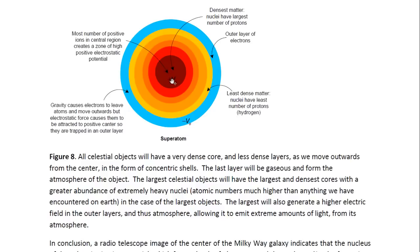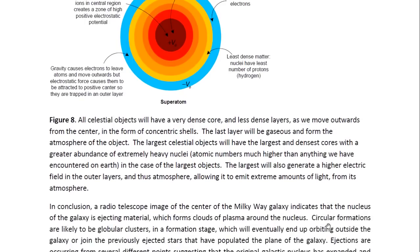It thus produces an electric potential difference which generates a high electric field in the outer layers and thus in the atmosphere. The outer layers would be less and less dense as we move outwards, and the least dense layer would be the atmosphere, which is gaseous. There would be a very high electric field in the outer region, and thus this would result in the largest objects, which would be stars, being able to emit extreme amounts of light from the atmospheres.